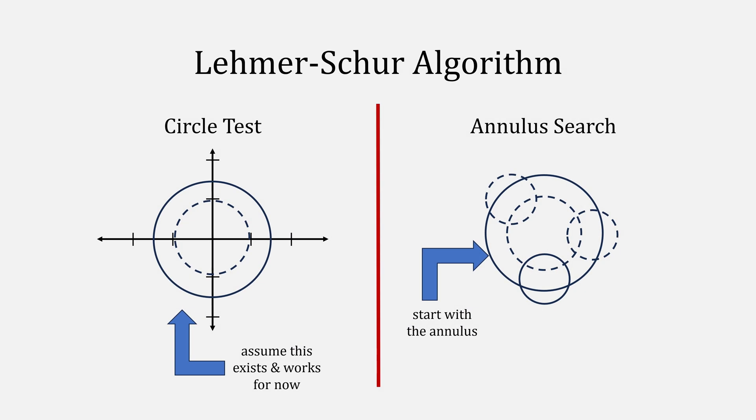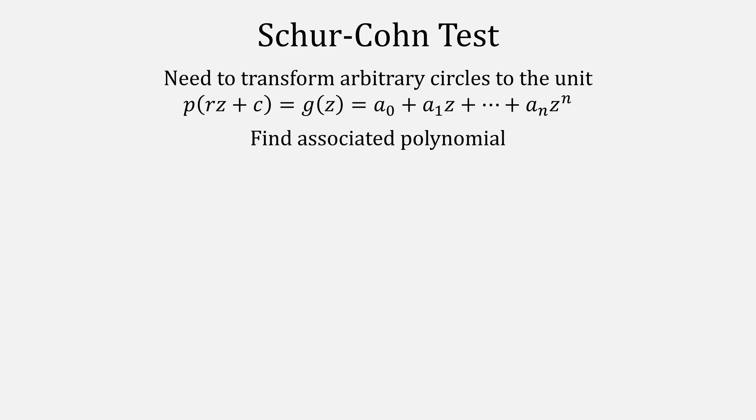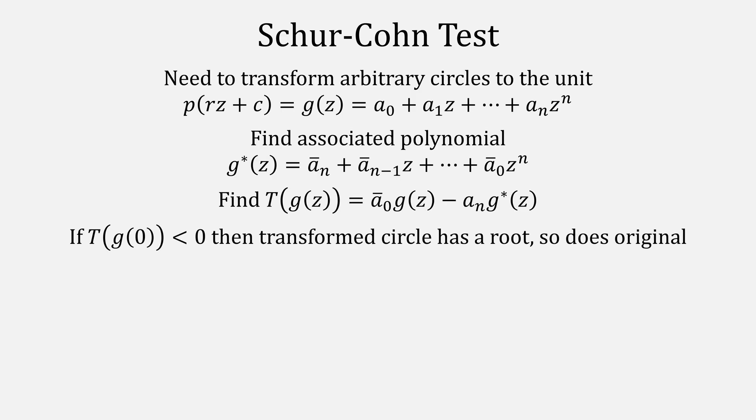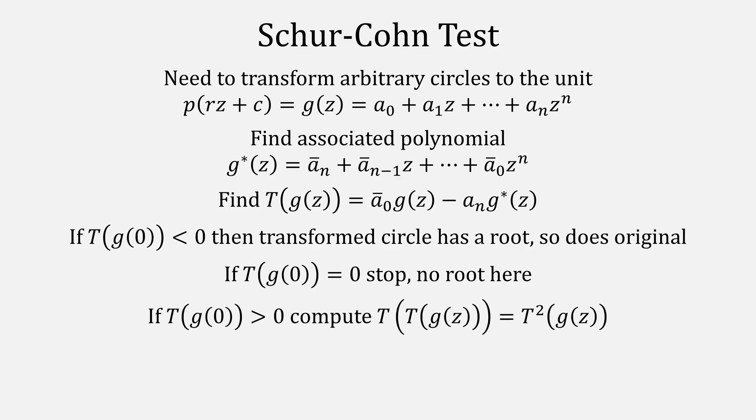Now it's time to go back and look at that circle test, which we skipped earlier. This test transforms polynomials around circles and any arbitrary circle to the unit circle. Essentially, plug in your radius and your center into your polynomial to come up with a new polynomial called g with coefficients a sub 0, a sub 1, etc. Then find an associated polynomial called g star, which has all the coefficients reversed and in complex conjugate. We then create a mapping function called t given by this equation. If t of g of 0 is negative, that means our transformed circle has a root, and so does the original. If it was 0, we can stop. We did not find a root. And if it's positive, that means we try computing t of t of g and repeat the process until you get 0 or a negative number.